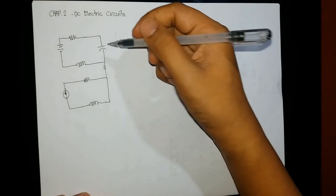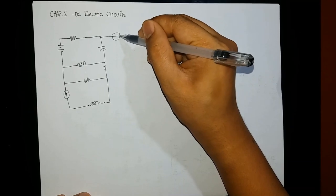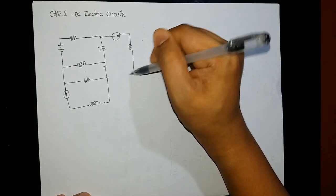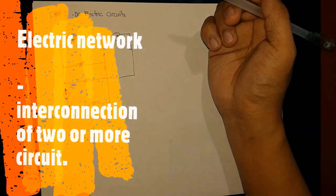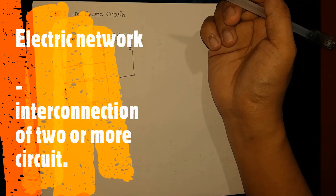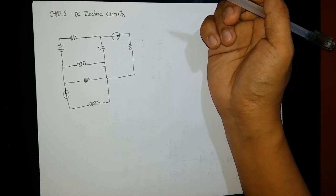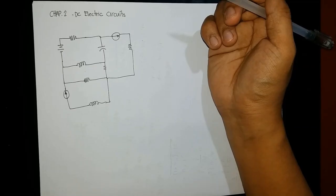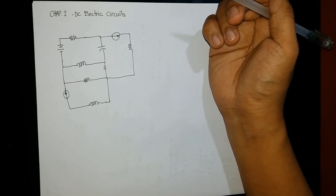As long as there is current flowing, this is considered an electric circuit. But if I connect these two circuits — say by a resistor or through a wire — and add another circuit, say a current source through a resistor, this can be called an electric network. Basically, an electric network is the interconnection or combination of two or more circuits, and is commonly composed of more than one source — either a voltage source or a current source.